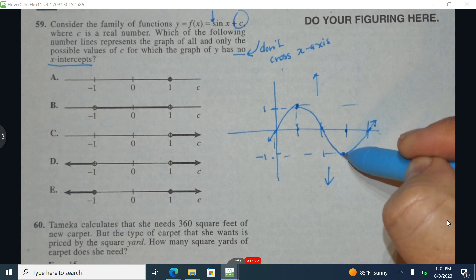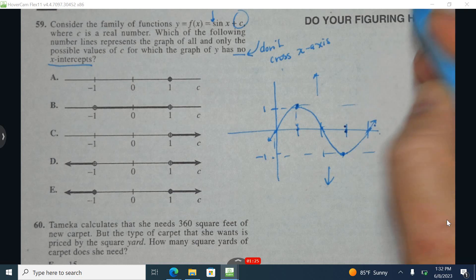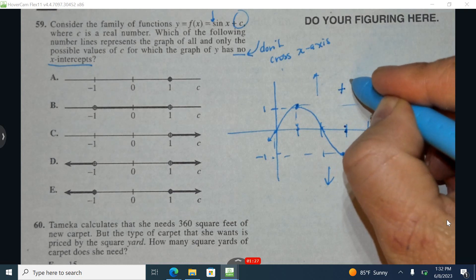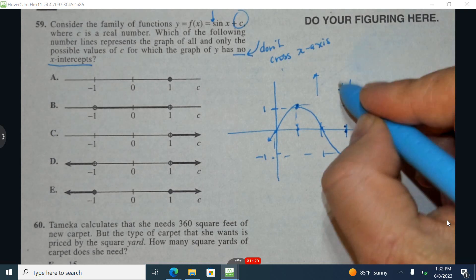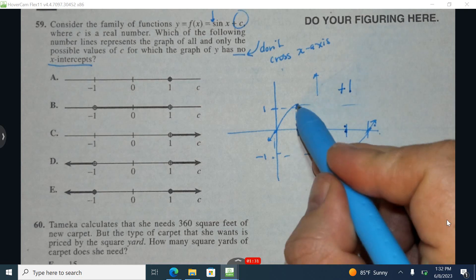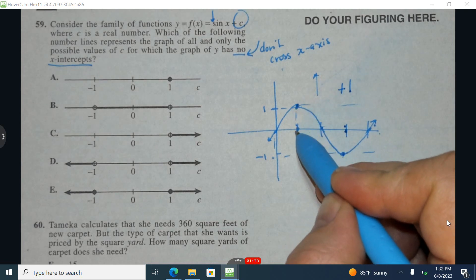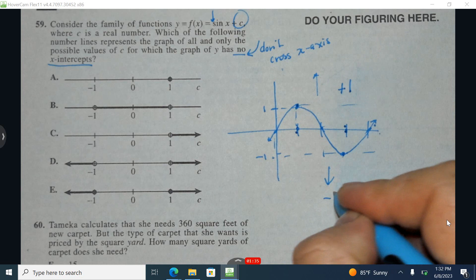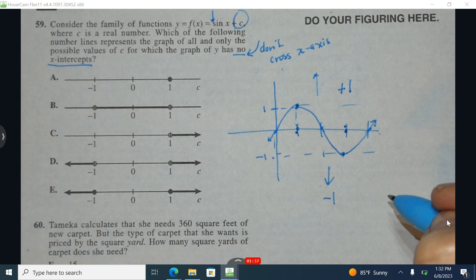We'll have to take the entire graph and shift it up just a little bit more than 1, so everything will have to go up slightly more than 1, or everything will have to be shifted down slightly more than 1. So up more than 1 or down more than 1.